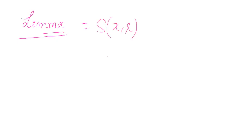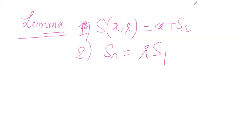I'm just writing a statement, or we can say what you have to prove: S(x,R) is equal to x plus S(R). This is number one. And number two: S(R) is equal to R times S(1). We used the concept S(x,R) equals x plus S(R) in the boundedness principle. Now I'm going to prove how both of these hold.